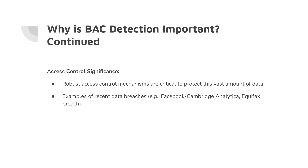So why is broken access control detection important? Robust access control mechanisms are critical to protect this vast amount of data. All the data that is harvested, collected, or sold needs to be protected to preserve user privacy and keep the integrity of these companies. There are a number of examples of recent data breaches, such as Facebook, Cambridge Analytica, and the Equifax breach.